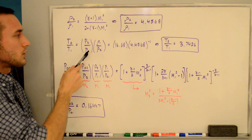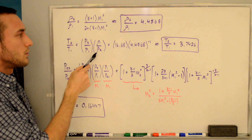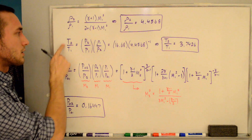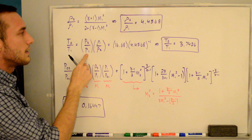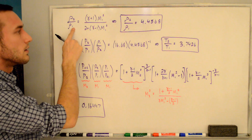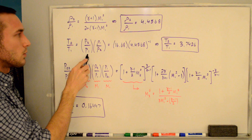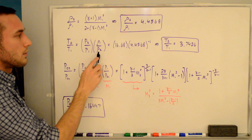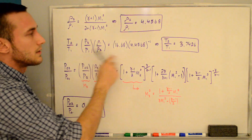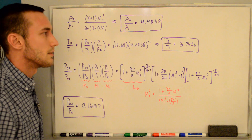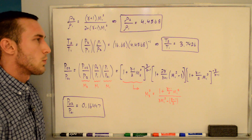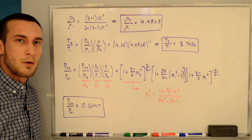The static temperature ratio is a function of the static pressure ratio and static density ratio, which can be derived by plugging in the ideal gas law. You end up with T2/T1 = (p2/p1) × (ρ1/ρ2) — note the density ratio is flipped. Plugging in 16.68 and 4.4568 to the negative one (because it's flipped), we get a static temperature ratio of 3.7426, so static temperature also increases across a normal shock.